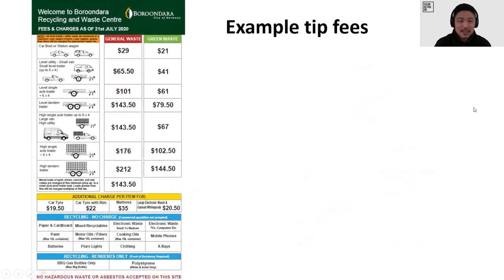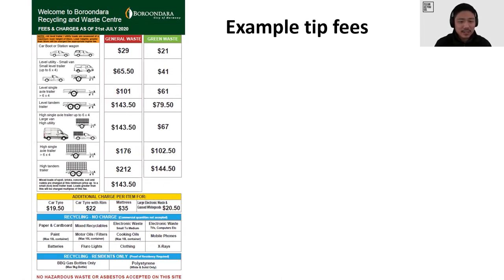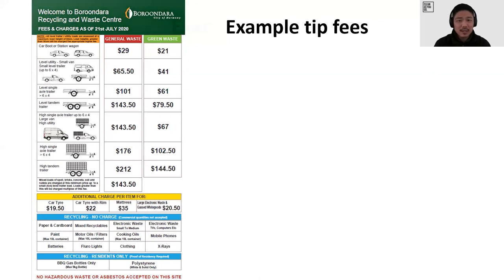This is an example of tip fees from Boroondara — different types of hard rubbish that can be dumped in different sizes of trailers and how they will charge you for that. Every council will have different ways of doing it, but this is just an example.